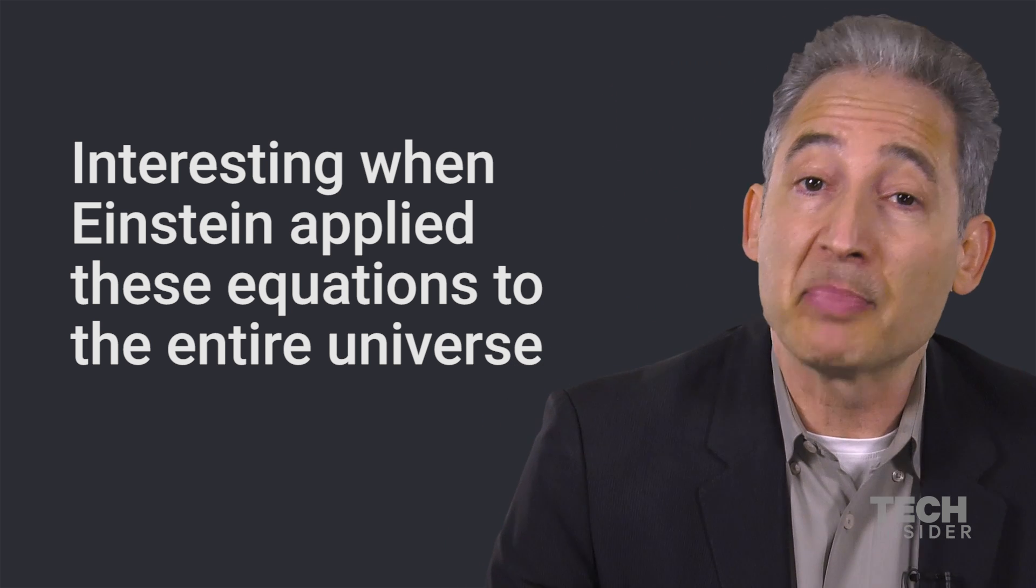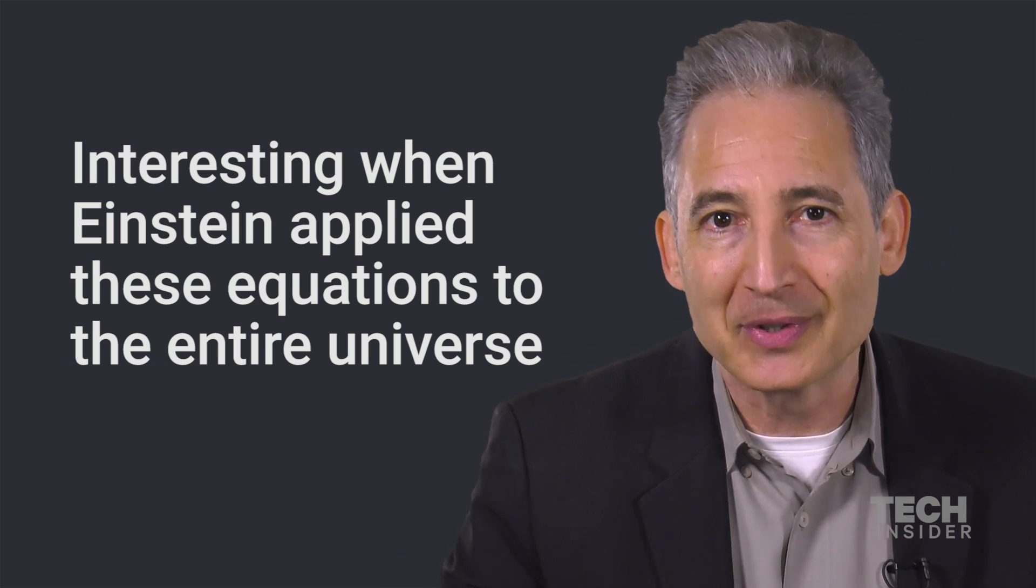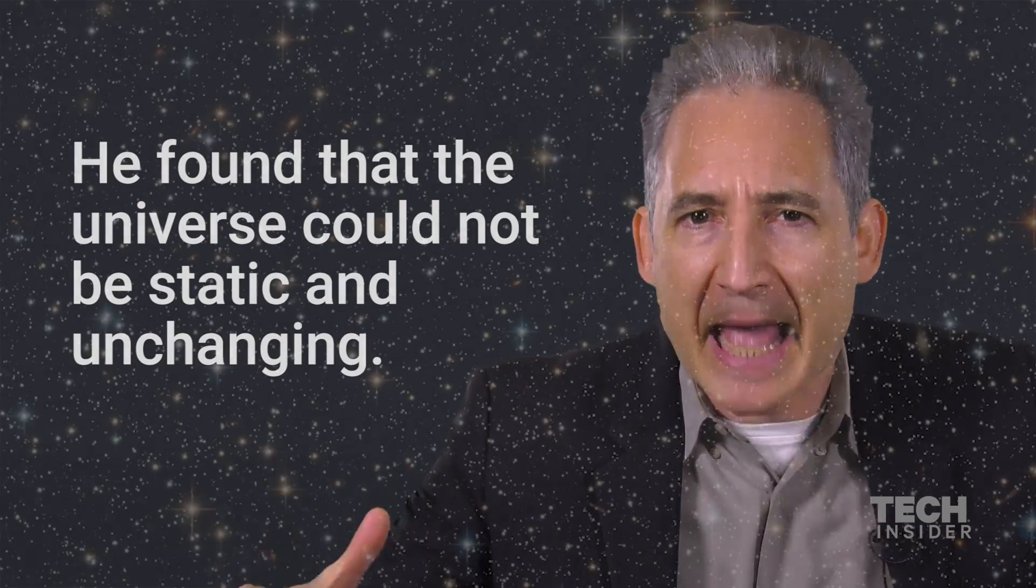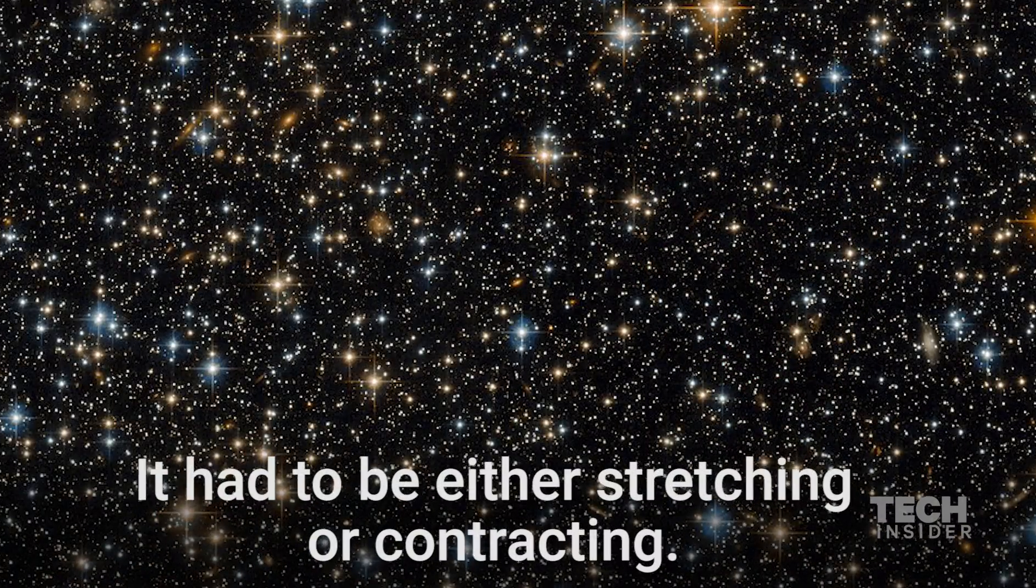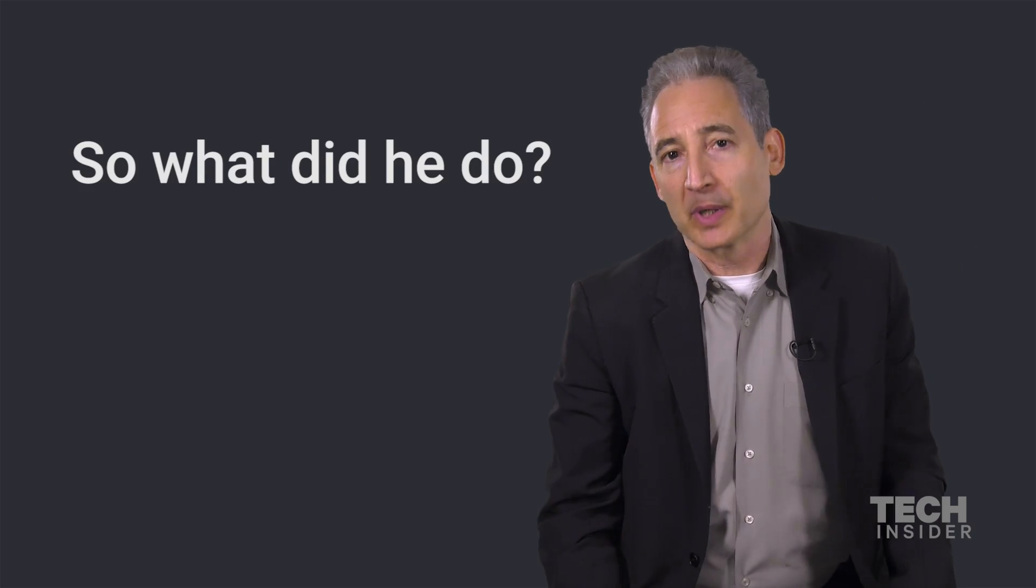Interestingly, when Einstein applied these equations to the entire universe, he found a result that he wasn't happy with. He found that the universe could not be static and unchanging. It had to either be stretching or contracting, and he said no, the universe is clearly static and eternal. So what did he do?